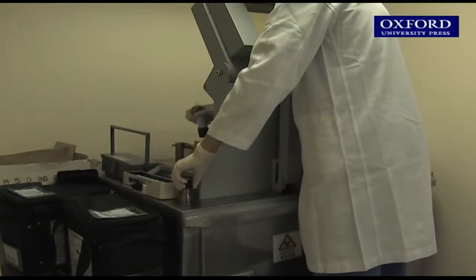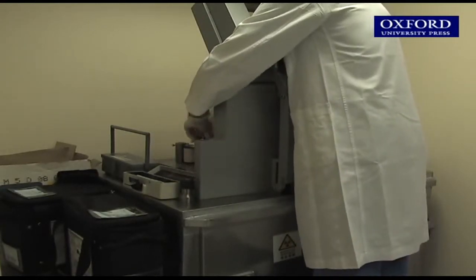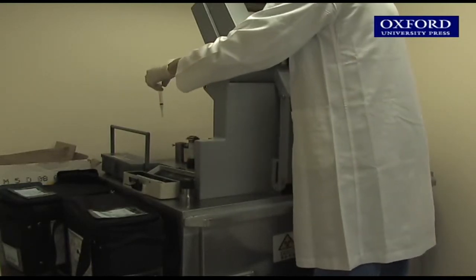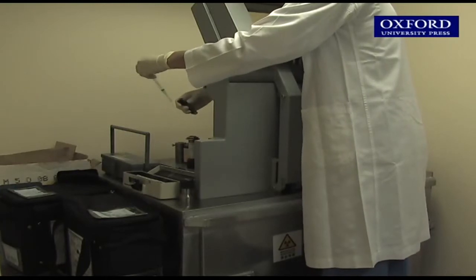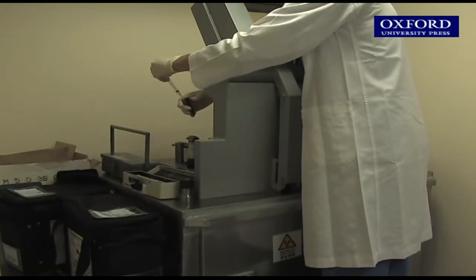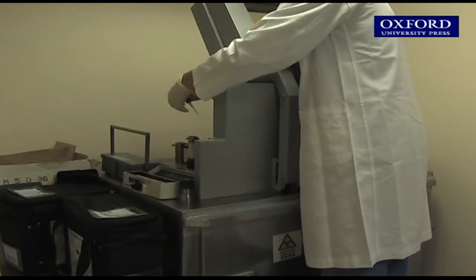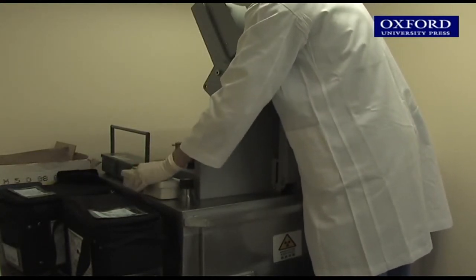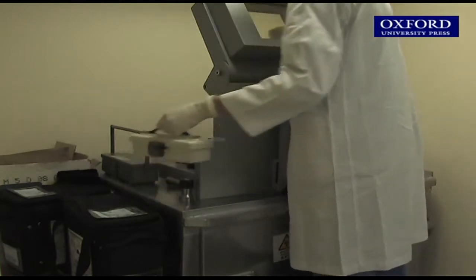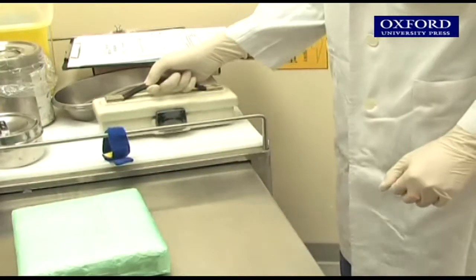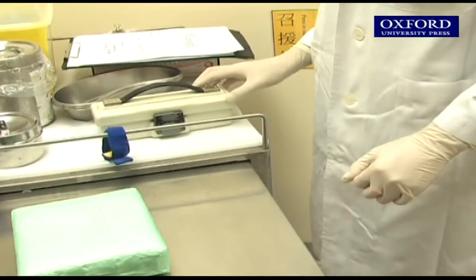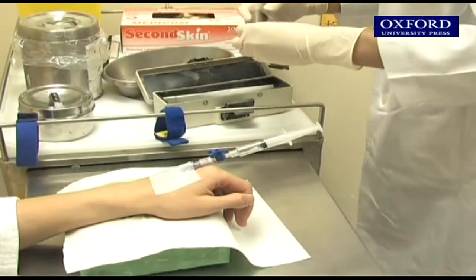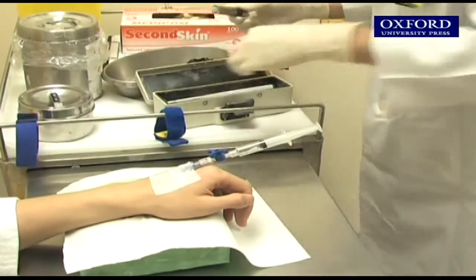The radioisotope tracer is stored inside a lead canister and will only be taken out when it's in use. As the tracer gives out gamma radiation, the member of staff taking out the tracer has to stand behind a lead protective shield during the process. The tracer is placed in a lead protective box when it's transferred from the storeroom to the patient. This helps reduce radiation exposure.